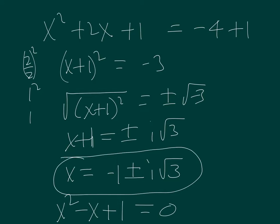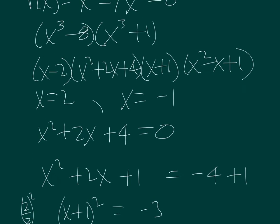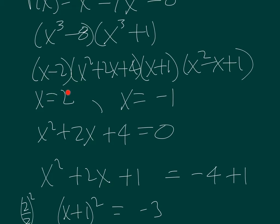So far we have four total. We have two, negative one, and the two we just found. Now we need to find the roots for the other quadratic x squared minus x plus one.